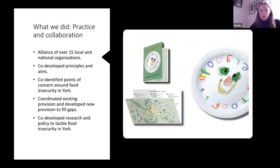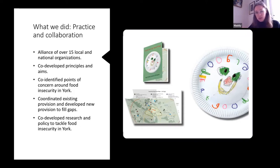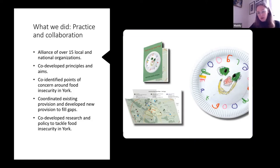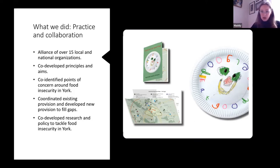From the start, we wanted a sense of common ground, so we co-developed some principles and aims — three key principles underpinning our work and around seven specific aims we wanted to achieve as an alliance. These were developed together as a community so that everyone was on board. We co-identified points of concern around food insecurity in York — we got together and asked 'what's the problem?' — and agreed on a particular understanding of food poverty that we wanted to address.